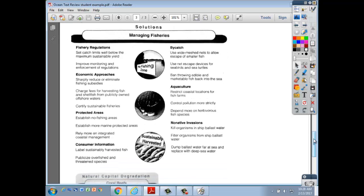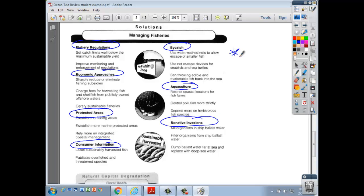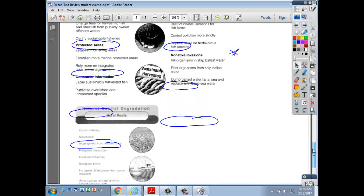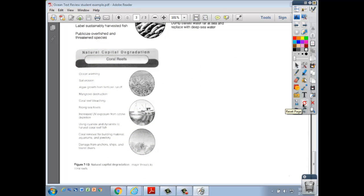To finish up here, I gave you managing fisheries a solution. This is a great note when you go to study in the spring. It talks about all the stuff that we talked about: regulations, bycatch problems, economic approaches, fish farming, protected areas, consumer information, non-native invasions. This is a great study tool for later in regards to this unit and these concepts. And then the same thing with coral reefs here. You can look at these and understand how coral reefs as natural capital are being threatened. Hopefully this helps. Have a great day.